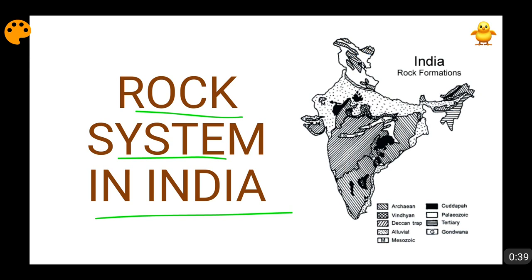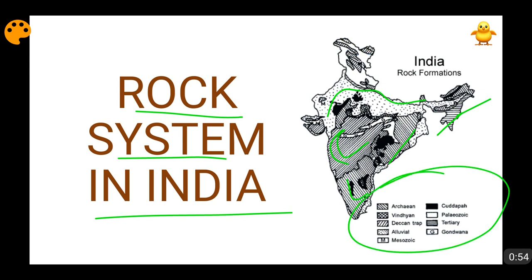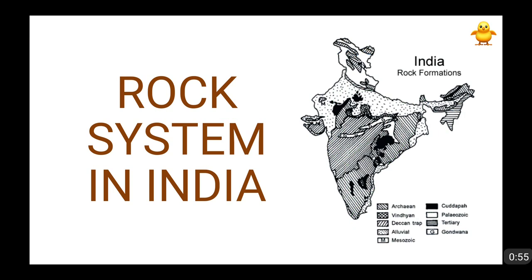So starting with this friends, you can see these are the Archean rocks. Then the Deccan Trap is found in this huge region. This is the alluvial soil region. This is the Tertiary system. So this map will give you a definite idea of where what type of rocks are found and where what type of geological system is found.